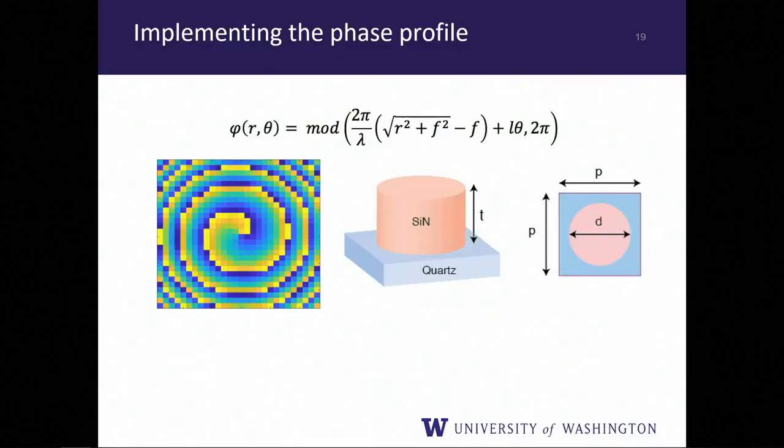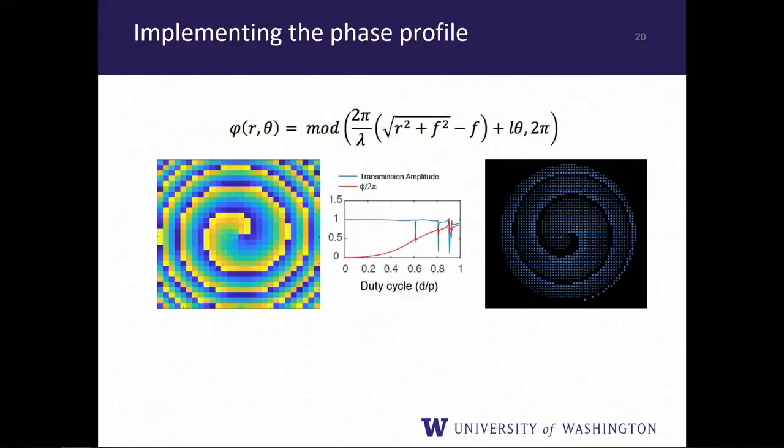We discretize the phase profile at the lattice periodicity — in this case 440 nm — then do a one-to-one mapping from phase value to pillar diameter. This vortex beam generator creates a donut intensity profile with applications in STED microscopy. The resulting layout shows discrete blocks at the periodicity of the lattice.